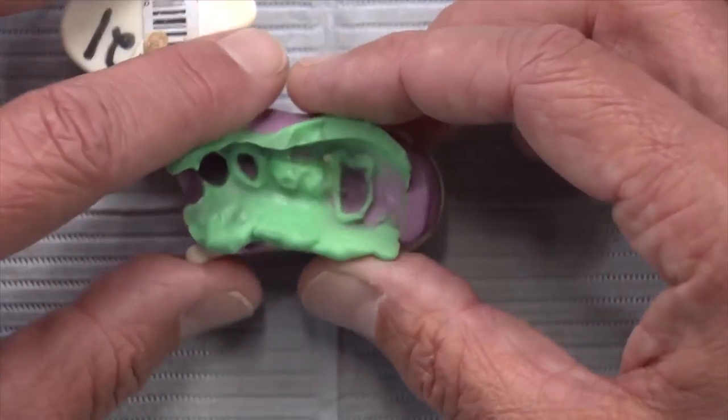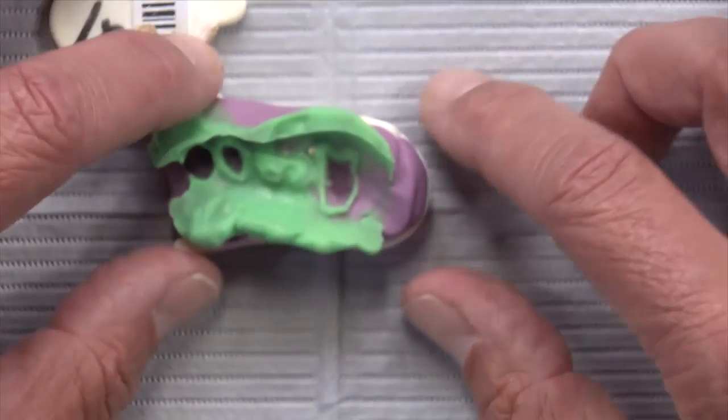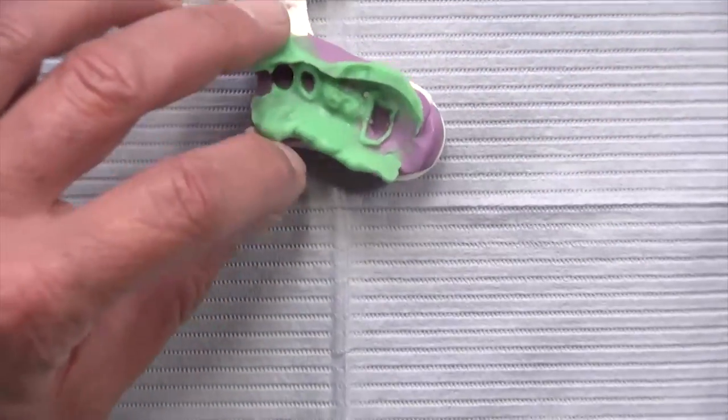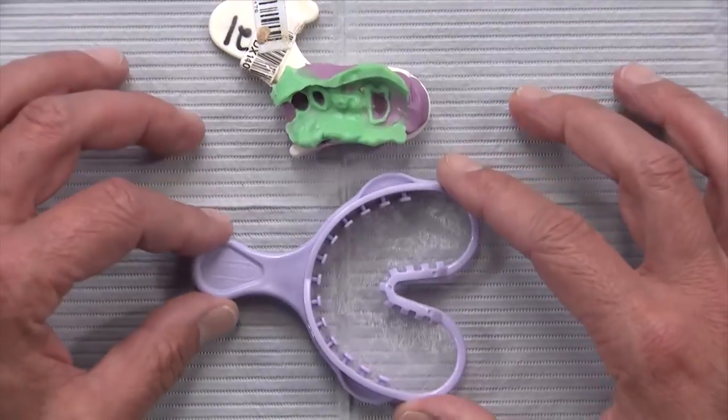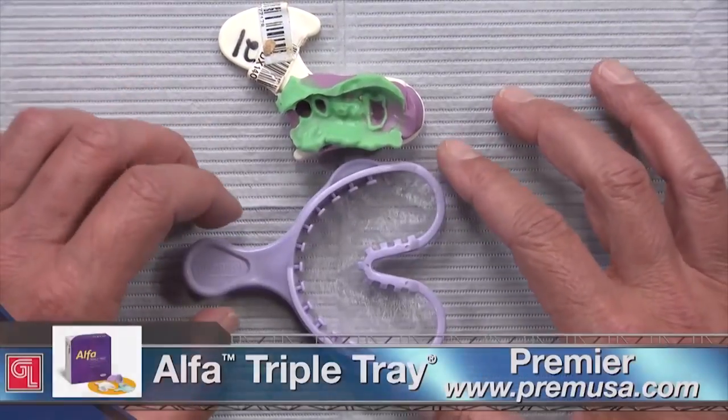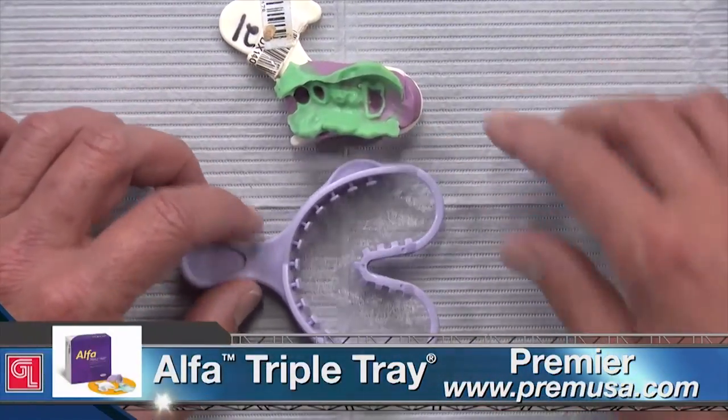So, if you really are, in fact, hell-bent on using a double arch tray like this, even though we don't recommend it, I want to introduce you to a tray you may not have seen before from Premier. This is called ALFA, A-L-F-A.